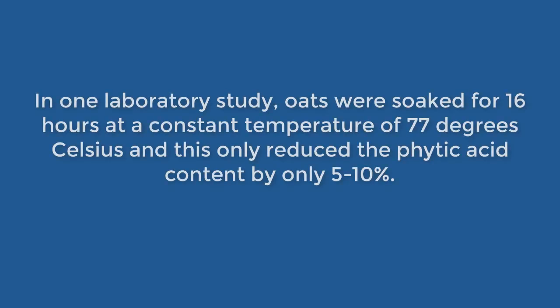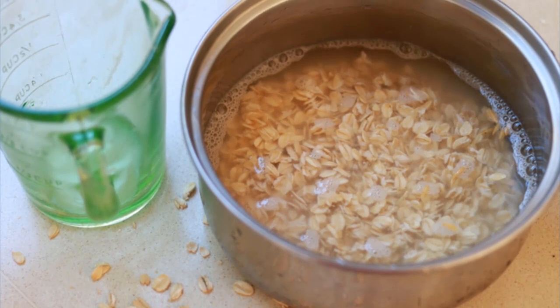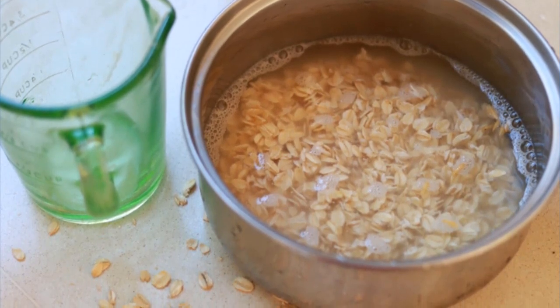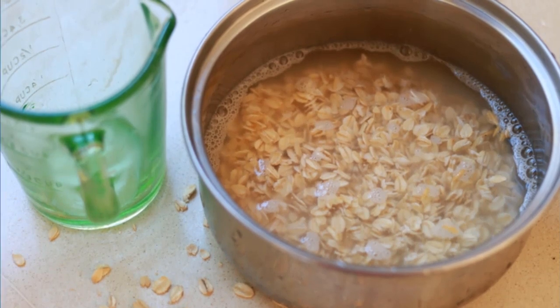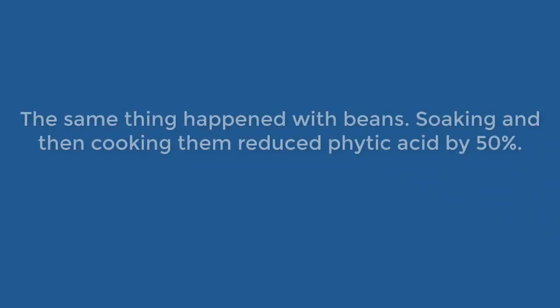In one laboratory study, oats were soaked for 16 hours at a constant temperature of 77 degrees Celsius, and this only reduced the phytic acid content by 5-10%. Soaking alone does not reduce the phytic acid content of oats, quinoa, sorghum, corn, amaranth, wheat, mung beans, and some seeds. But this does not paint the whole picture — although soaking alone did not reduce the phytic acid, if you cooked the quinoa after soaking, you'd reduce the phytic acid content by 61%. The same thing happened with beans.